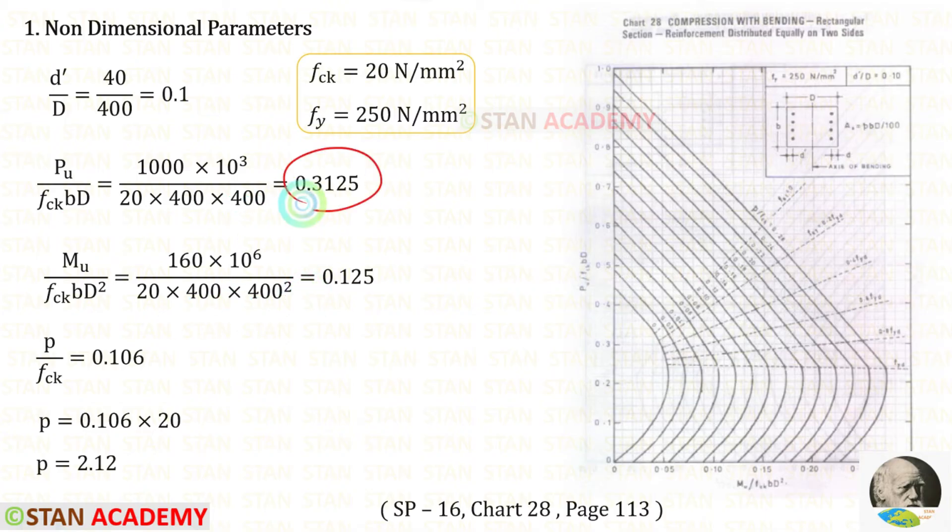Now using this value we can make a horizontal line in the chart. And using this value we can make a vertical line in the chart. Both of the lines intersect at this point.